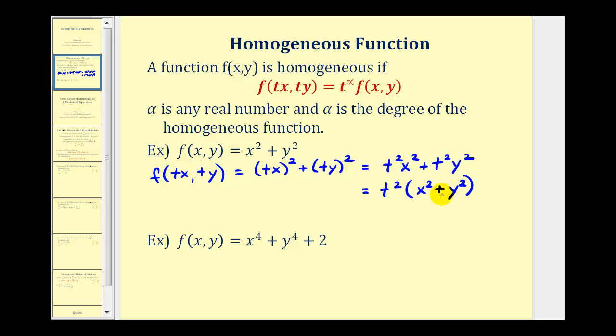We'll notice that x² + y² equals the original function, so we can say that f(tx,ty) equals t² times the original function f(x,y). This tells us that this is a homogeneous function and the degree is two.